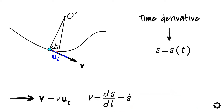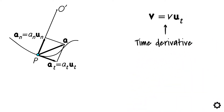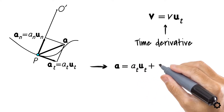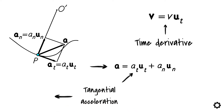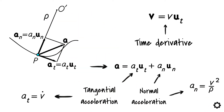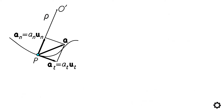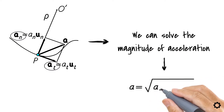We can now also describe the acceleration vector a by using the velocity vector we just determined and taking the time derivative of it, which leads to the following equation: a equals at times ut plus an times un, where at is the tangential acceleration of the particle, written as at equals v-dot, and an is the normal acceleration of the particle, written as an equals v squared by rho, where rho is the radius of curvature. Note that both acceleration vectors at and an are perpendicular to each other. Therefore we can solve the magnitude of acceleration as follows: a equals the square root of at squared plus an squared.